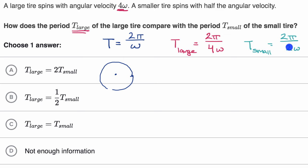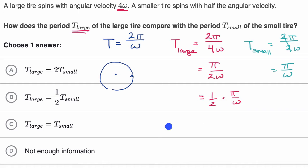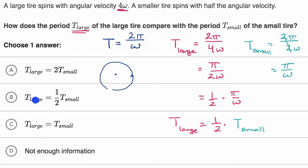So how do these two things compare? Let's simplify these expressions. T sub large simplifies to pi over two omega, and T sub small simplifies to pi over omega. The T sub large expression is half of the T sub small expression — I can rewrite T sub large as one half times pi over omega, which is one half times T sub small. So T sub large equals one half T sub small. The period of the larger tire is one half the period of the smaller tire.